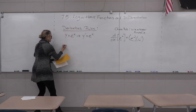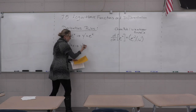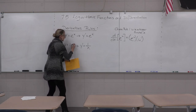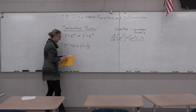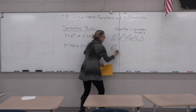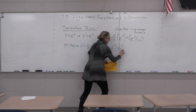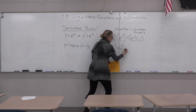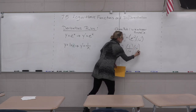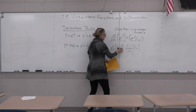Next rule: y equals the natural log of x. The derivative y prime equals one divided by x. For the chain rule version, the derivative of the natural log of u is one over u times u prime — that's one over the inside times the derivative of the inside.